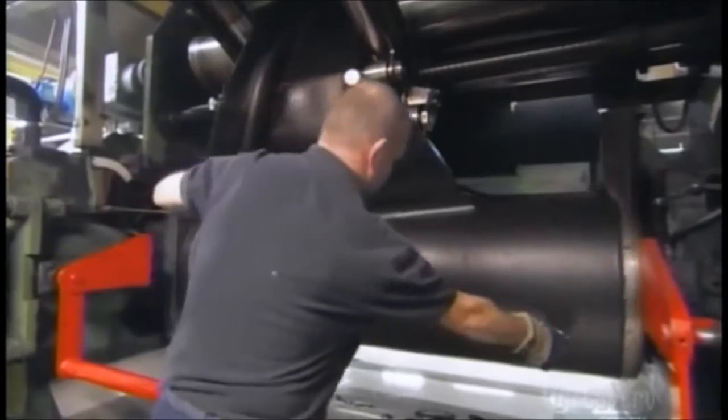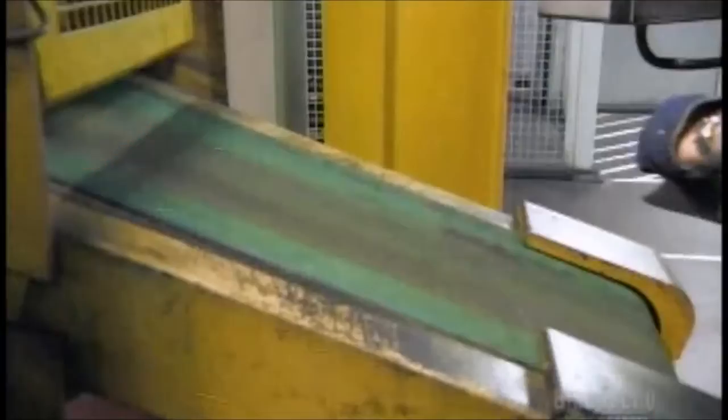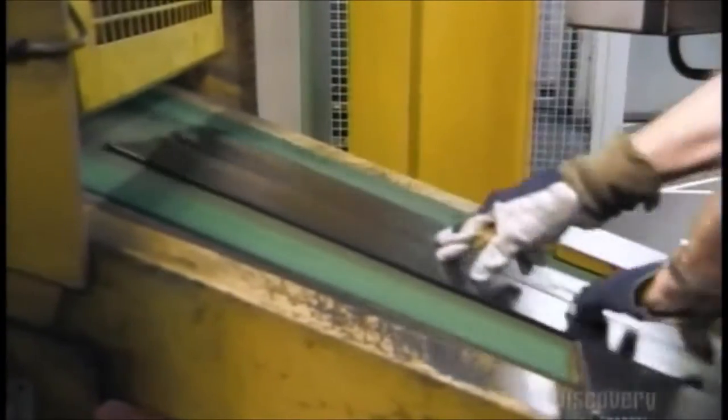Then they add powdered carbon to the rubber and leave it to mix. After several hours, a worker cuts the rubber away from the mixer and feeds it into a heat treating machine.